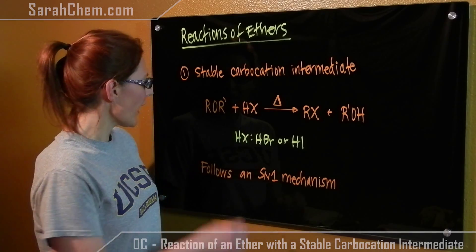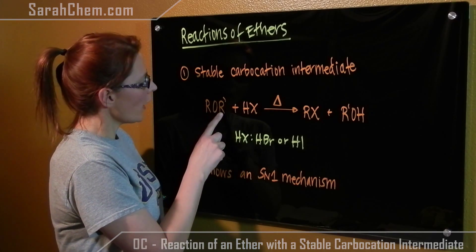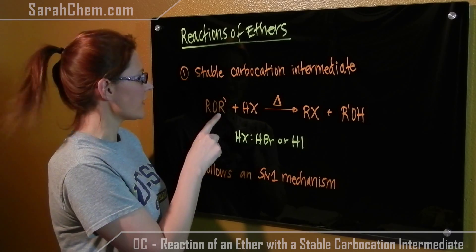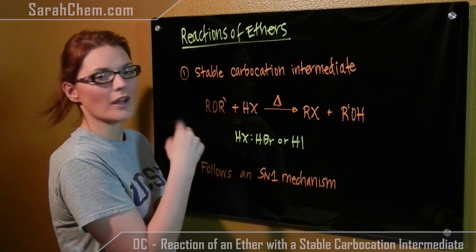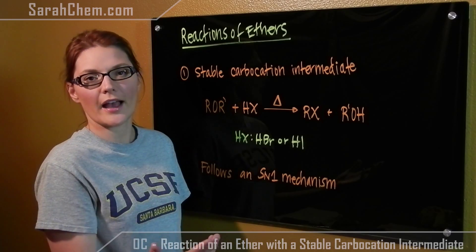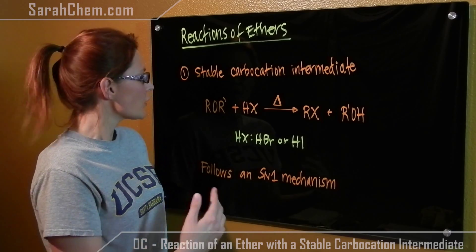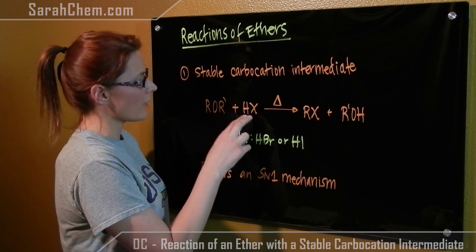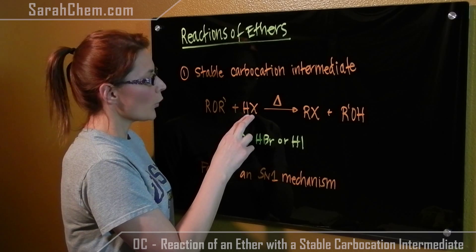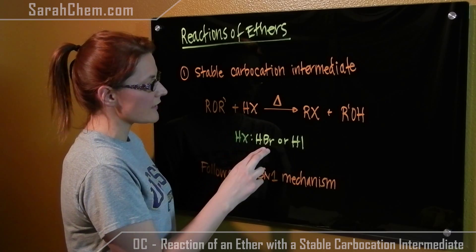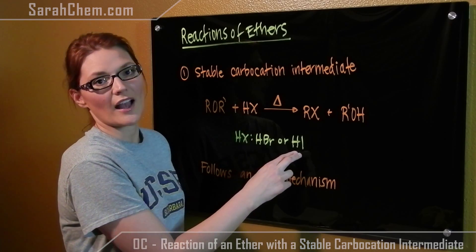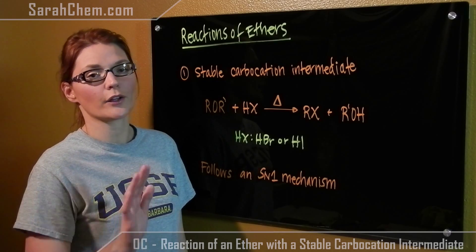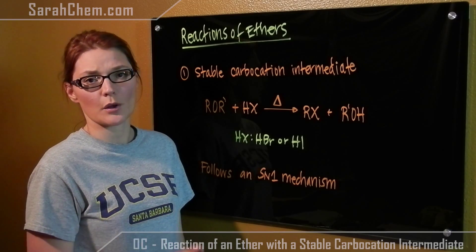So what we have here is our ether group. The R' is designated here just to make sure you understand that these R groups do not necessarily have to be exactly the same. So much like an alcohol group, this ether can react with HX, where HX represents either HBr or HI. It does not have a reaction with HCl, as it goes way too slowly.